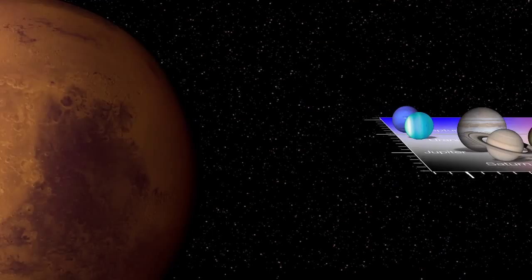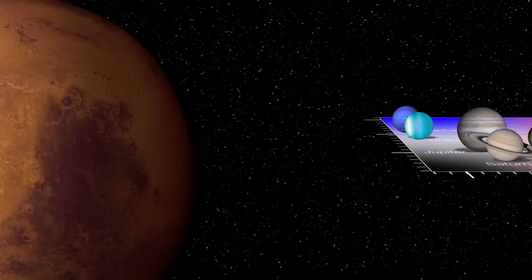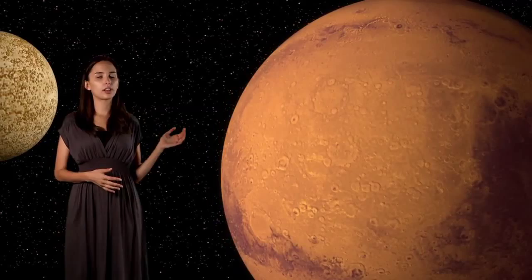Not surprisingly, Mars, the reddest planet, occupies the reddest spot. Mercury is also nearby in the plot because neither planet has a large atmosphere that scatters blue light.